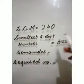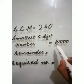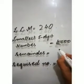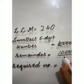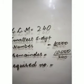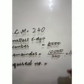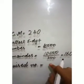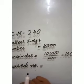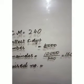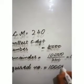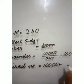We get LCM = 240. The smallest five-digit number is 10,000. We divide 10,000 by 240 and get a remainder of 160. The required number is found by taking the smallest five-digit number and adding LCM minus the remainder.